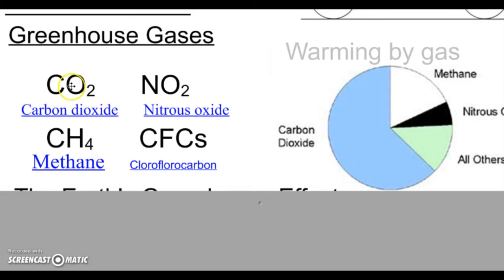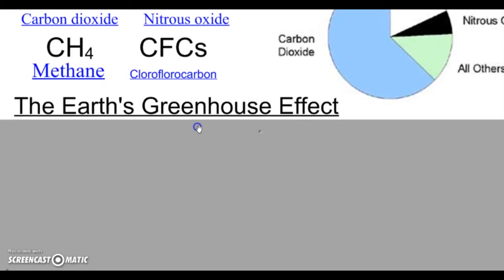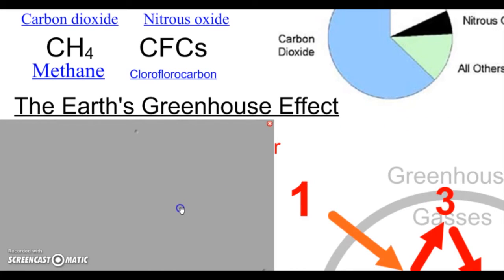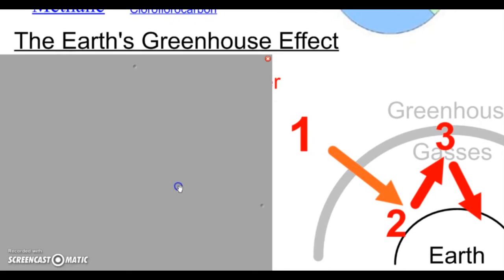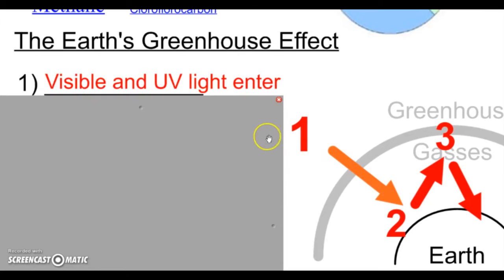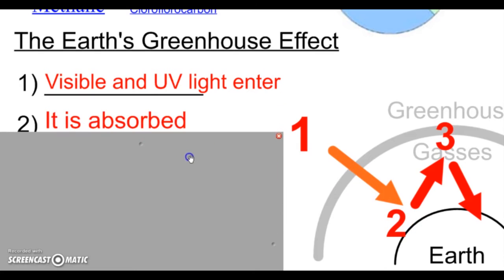So these are all trace gases. That's a good point to know: those little trace gases that there's not very much of in the atmosphere do a lot of stuff that affects us. Now the Earth's greenhouse effect, I have a drawing to go along with it. It should look familiar. One, this is coming from the sun. Visible and ultraviolet light enter the system. It hits the Earth.